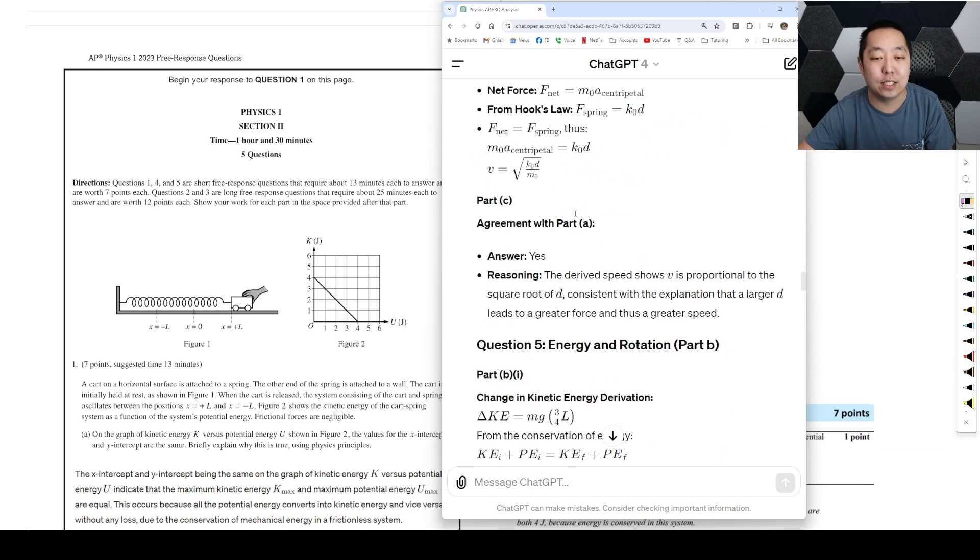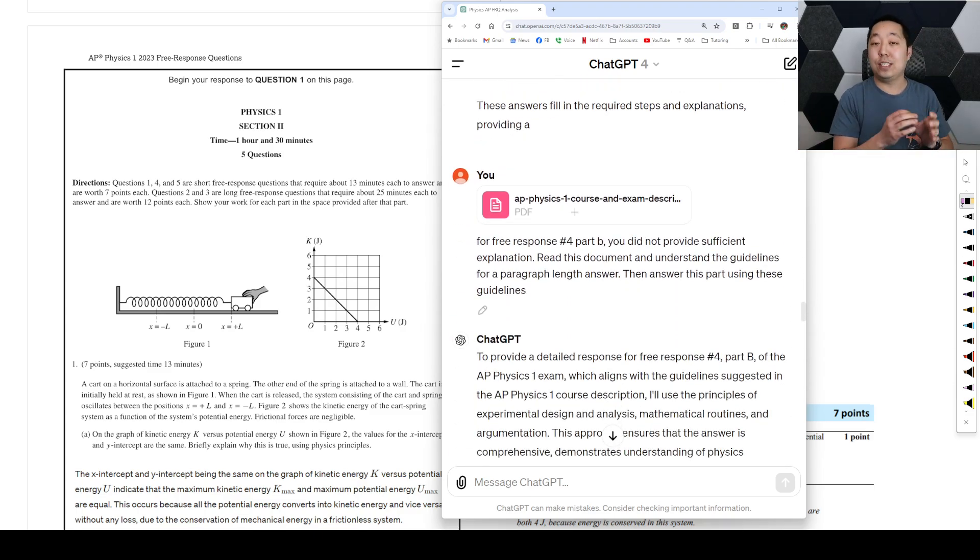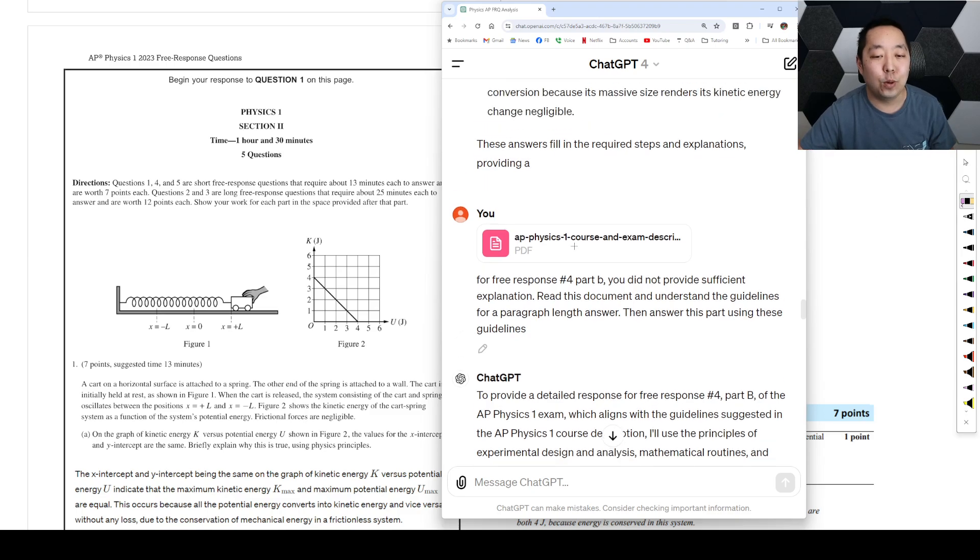And then the last thing I realized is the paragraph answer question, which is a notoriously difficult one, is one where it was like really brief on the explanation. So what I did then was I said, hey, I don't think you understand what is exactly is required from a paragraph answer. So I went ahead and loaded in the exam course and exam description, which describes the entire document that explains everything that's taught in AP Physics 1 and the guidelines. And then all I did was tell it again. For free response number four, you didn't provide sufficient explanation. Read the document, understand the guidelines, then answer.